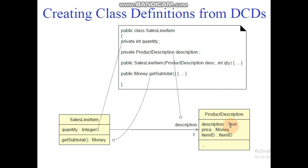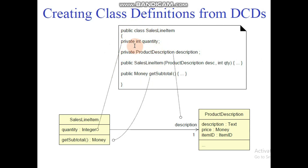We will create some design class diagrams here and create methods from these classes. You can see here that there is a class that is public and its name is SalesLineItem. We have a definition, we have a method: private int quantity. What is the attribute here? We have quantity with integer data type, so we have written int quantity.